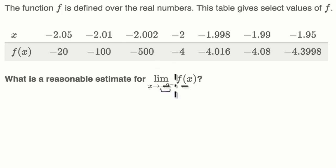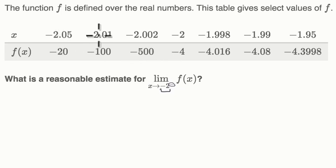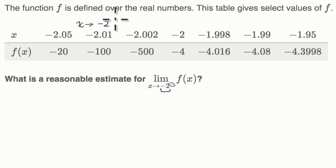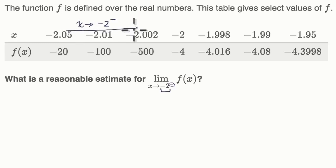And we're going to approach, once again, from the left. So lucky for us, they have values of x that are approaching negative two from the left. So x approaches negative two from the left — that is happening right over here. So that's these values.